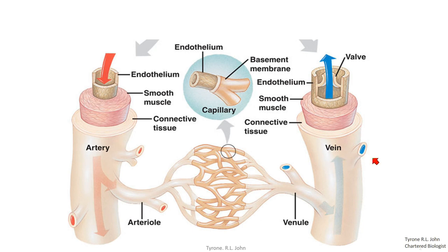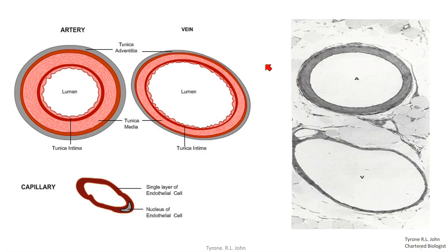So the five blood vessels in order are: artery, arteriole, capillary, venule, and vein. Now we'll look at the structure of these vessels, starting with the artery and vein together since their structure is similar, but with some important differences. It's also important to be able to identify blood vessels from microscope images.